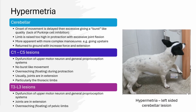The limb is raised too high during protraction with excessive joint flexion. In this still image from a video, you can see the limb raised up high with flexion through all of the joints — flexed at the elbow and at the carpus as well. This is much more apparent when you do more complex maneuvers.